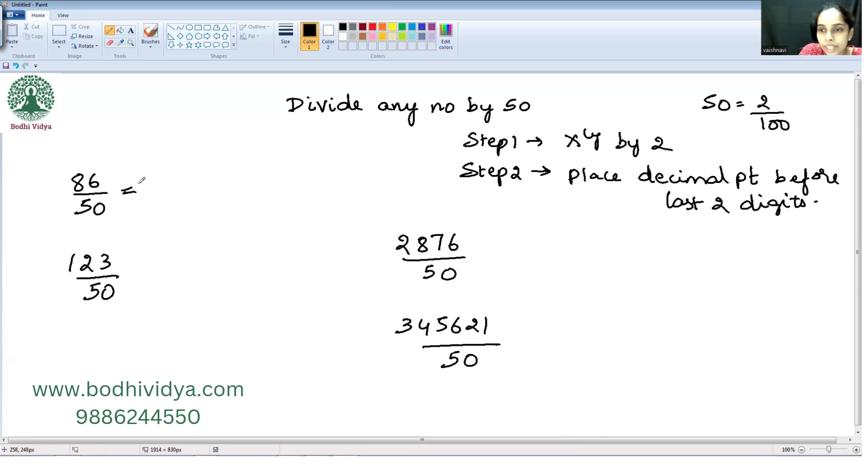So it is 8 times 2 is 16, and 6 times 2 is 12. 172, place before 2 digits, and your answer is 1.72.